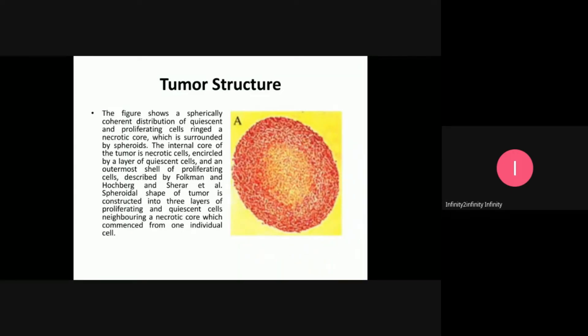The figure shows a spherically coherent distribution of quiescent and proliferating cells surrounding a necrotic core at the tumor's center. This structure, with the internal necrotic core surrounded by a layer of quiescent cells and an outermost shell of proliferating cells, was described by Folkman and Hohenberg, and many researchers have discussed these three layers.